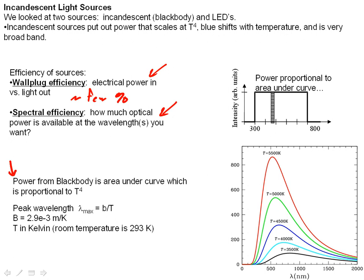First of all, the power that comes from a blackbody source is given by the area under the curve. The total amount of power is proportional to the area under the curve, and that increases as the temperature of the blackbody or the light bulb filament to the fourth power. So if you double your temperature, you get 16 times as much power out.